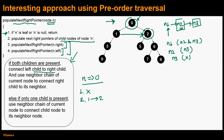In step three, we make a recursive call to populate next right pointers in the right subtree, which starts from node 2. In this recursive call, step 1 has no effect. In step 2, with current node as node 2, very similarly, node 5's next right pointer will be populated with node 6, and node 6's next right pointer will be kept as null.